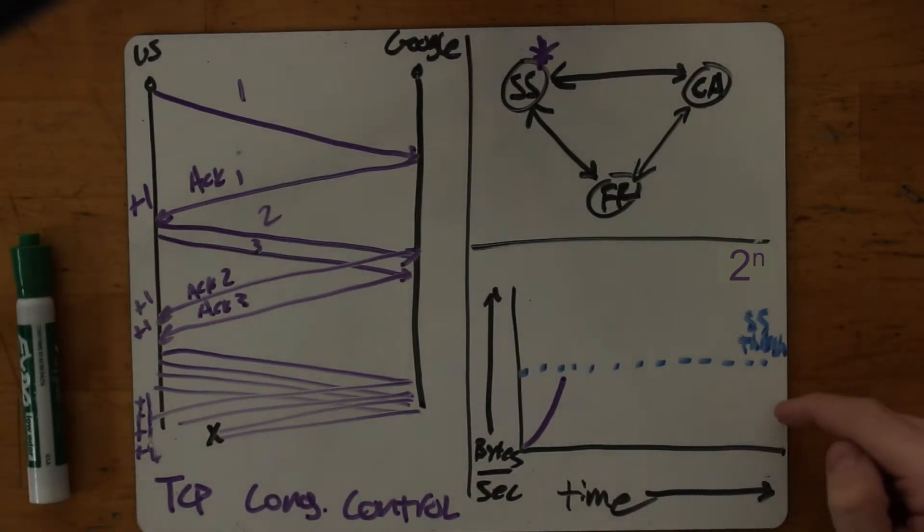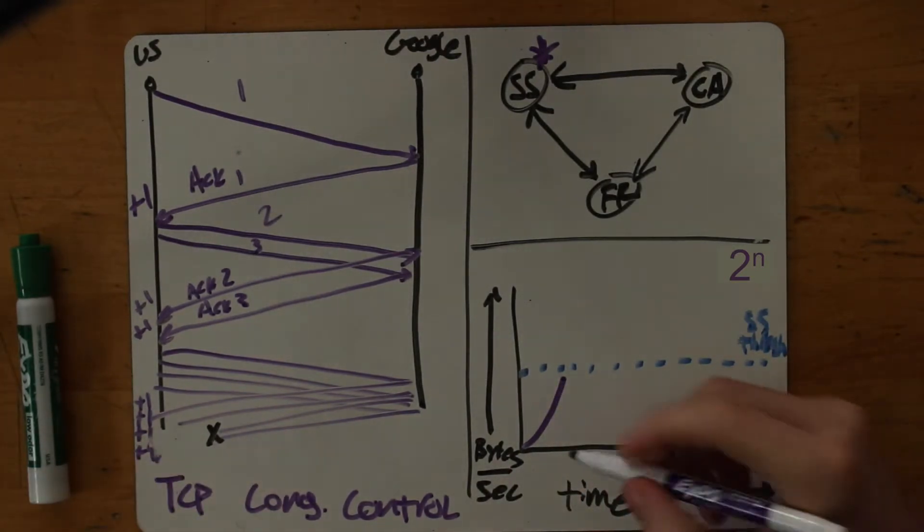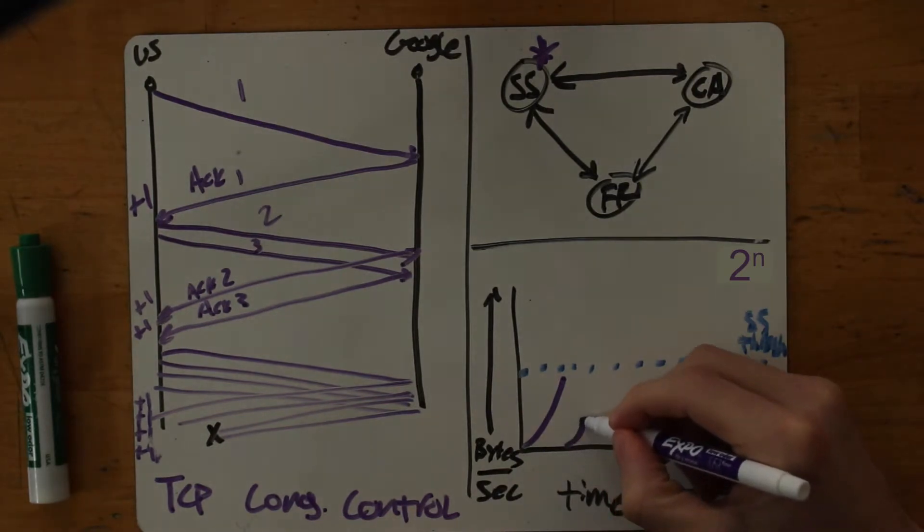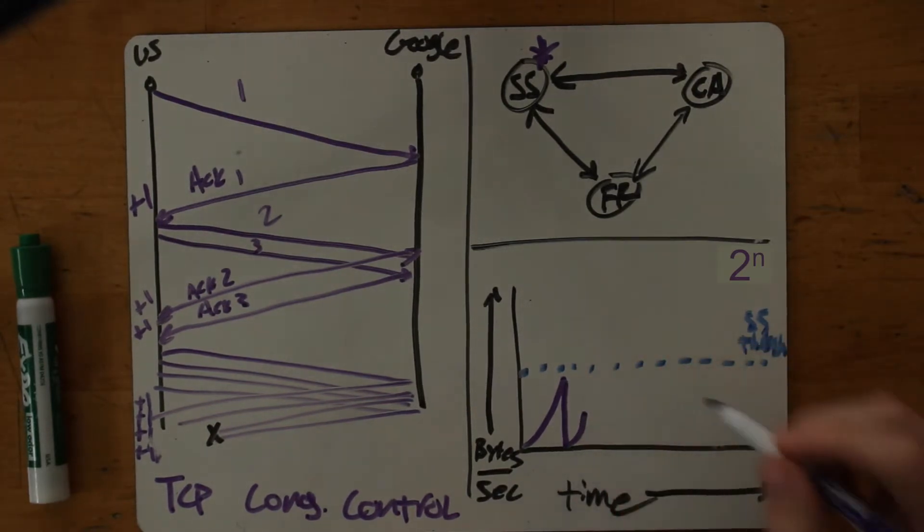And then start slow start over again. So we'd lower it and then we'd start again from here. This would drop like this. This is in the case that we lost a packet and our new slow start threshold is somewhere lower, and we try to do slow start until we get to that moment.